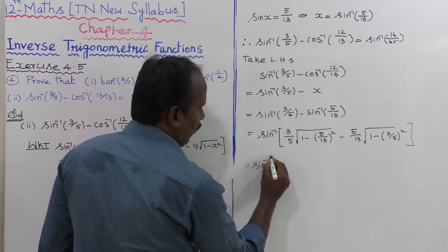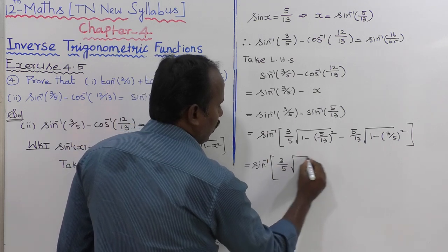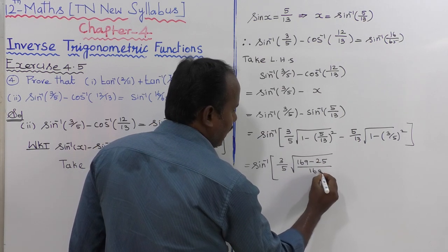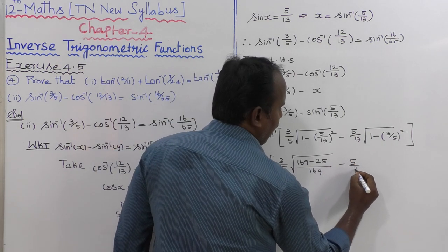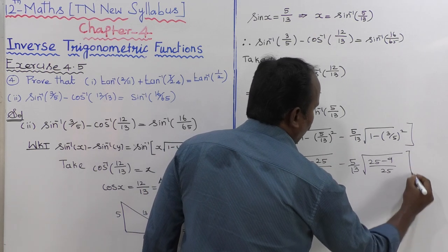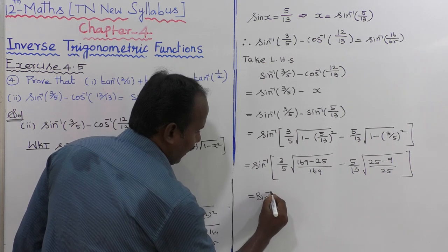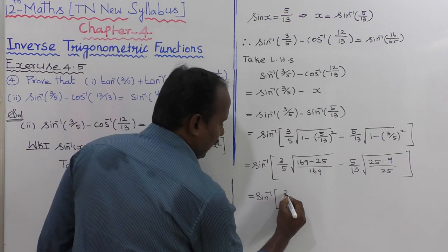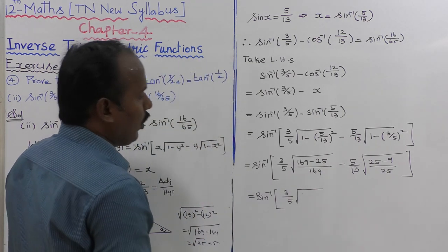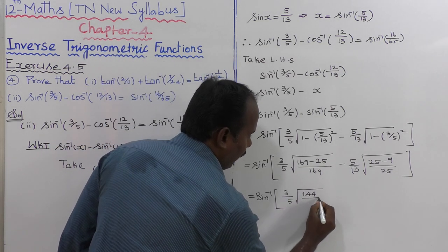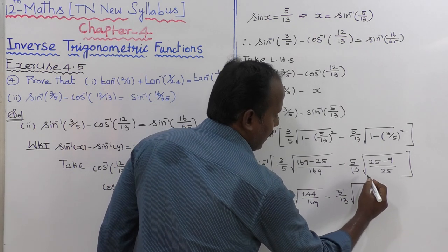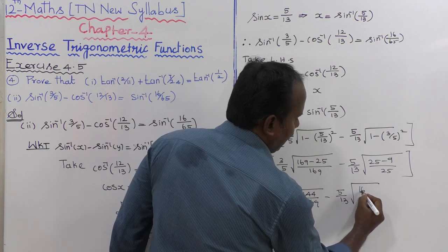That equals sin inverse of 3 by 5 into root of 169 minus 25 divided by 169, minus 5 divided by 13 into root of 25 minus 9 divided by 25. That simplifies to sin inverse of 3 by 5 into root of 144 divided by 169, minus 5 divided by 13 into root of 16 divided by 25.